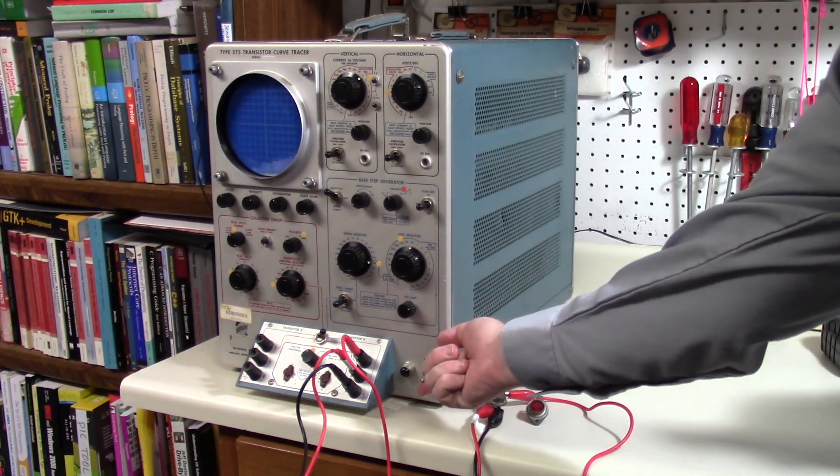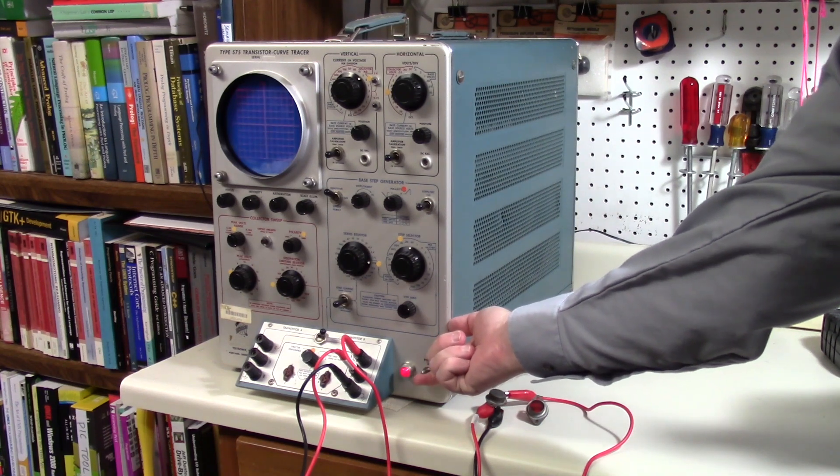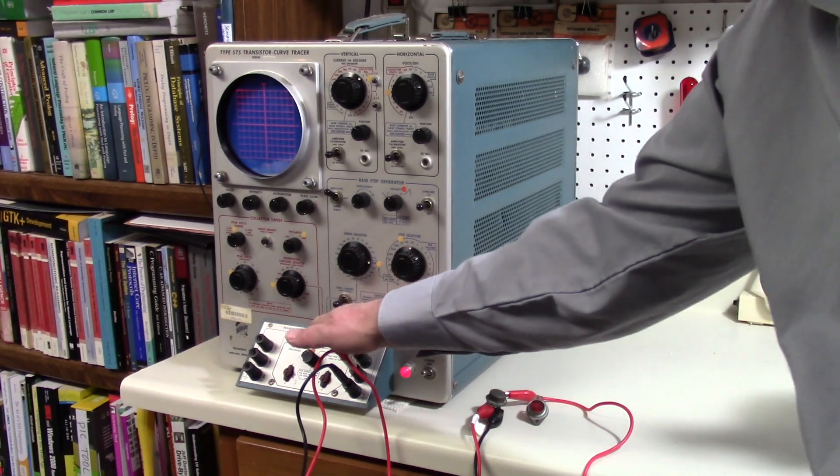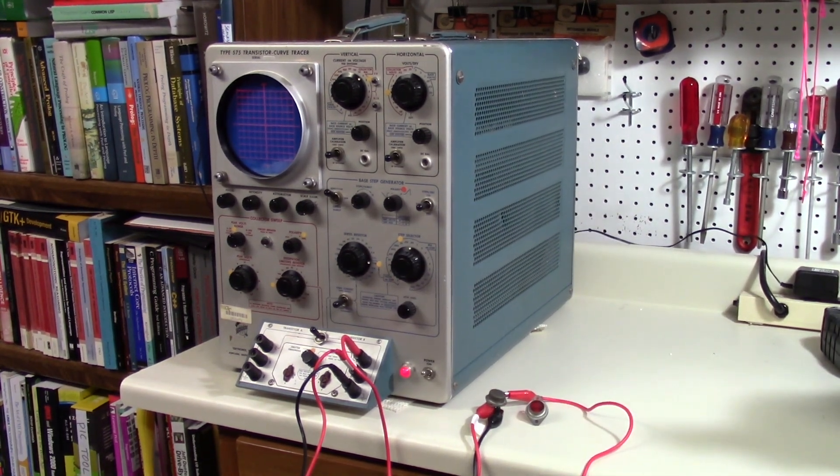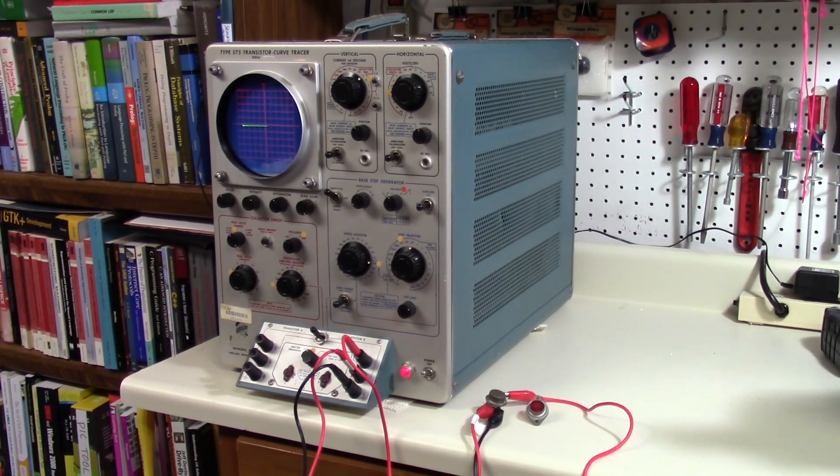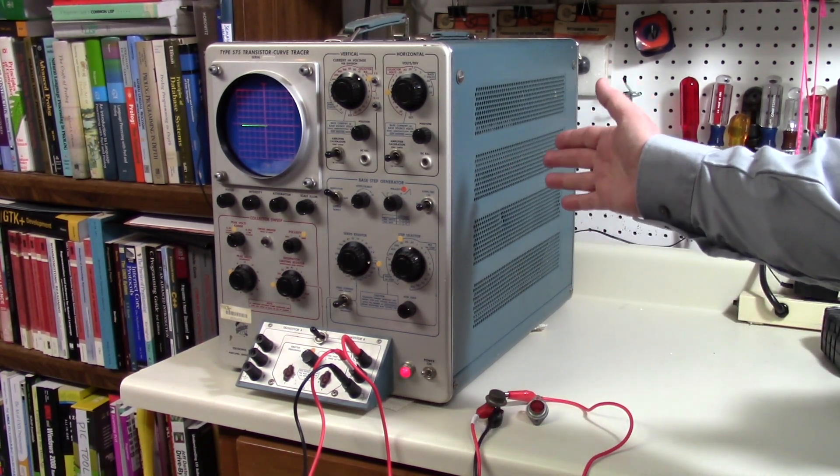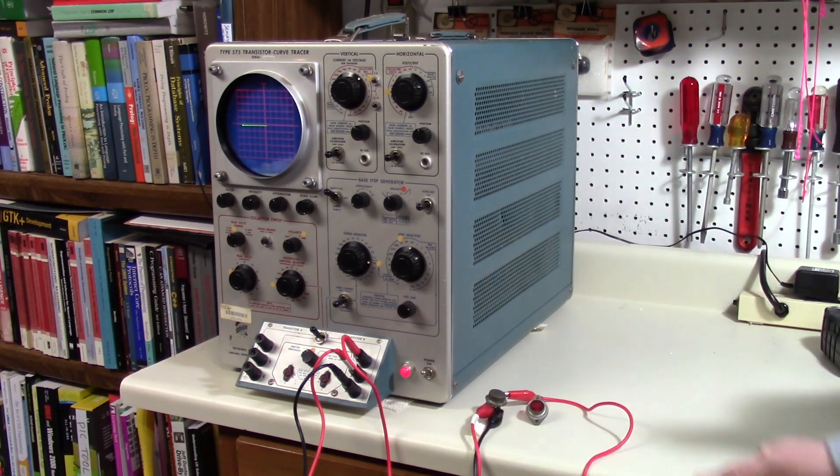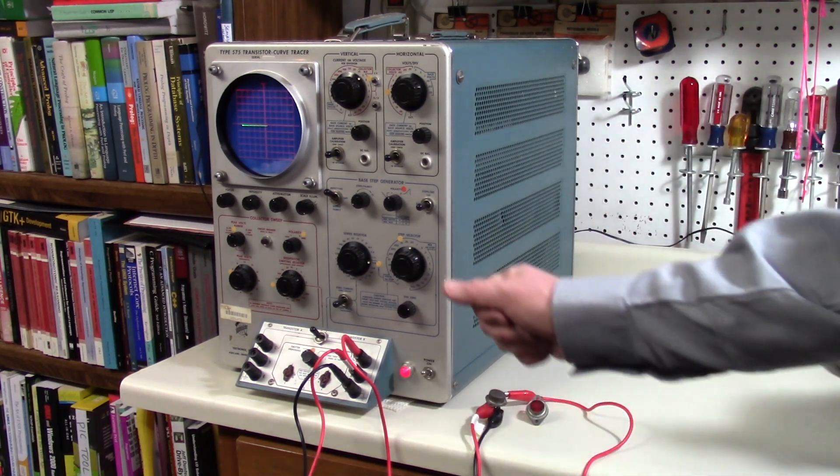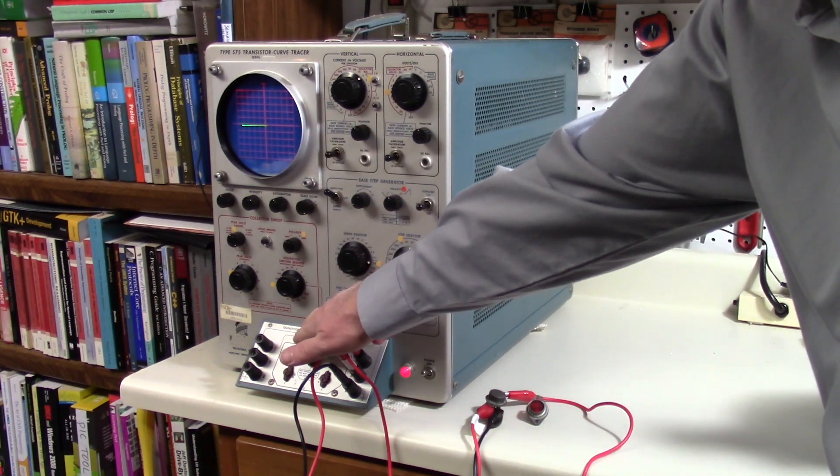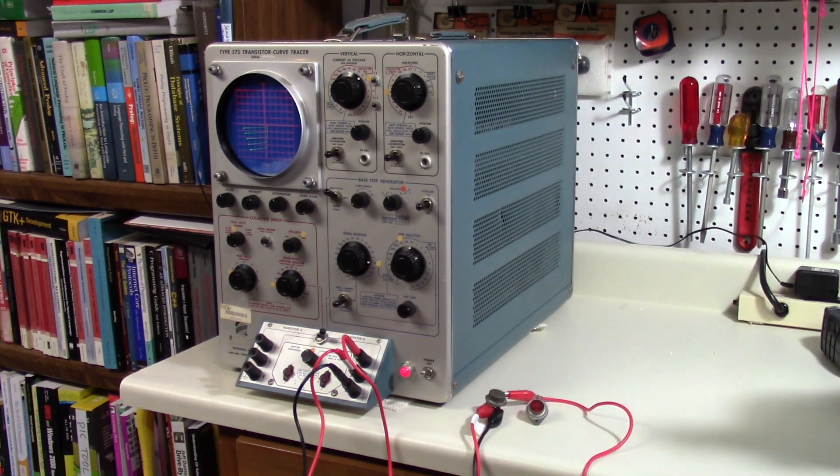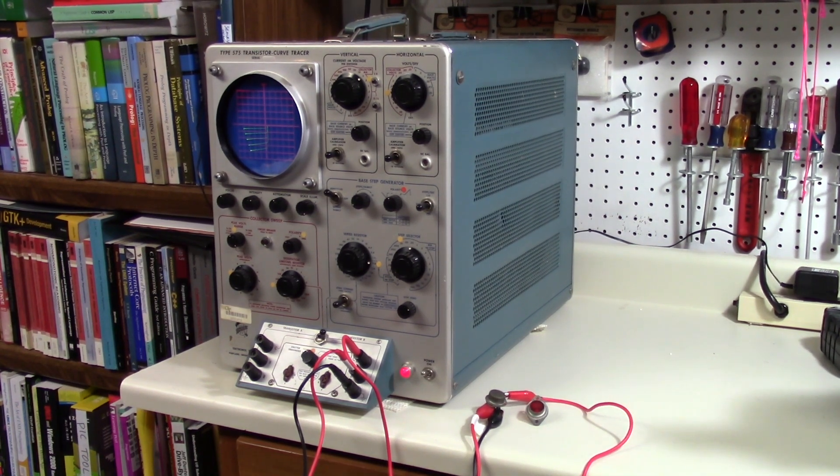Next step is to turn the instrument on and let it warm up. I said warm up because this instrument has at least 39 vacuum tubes in it and it takes them a few minutes to reach full working temperature and actually start amplifying electron flow. But I think it's ready now. Connect this transistor and there we see its characteristic curves. You will be able to see this better if I turn down the room lights.